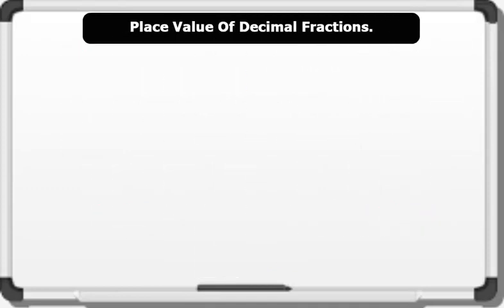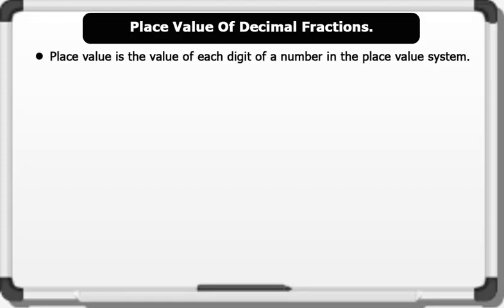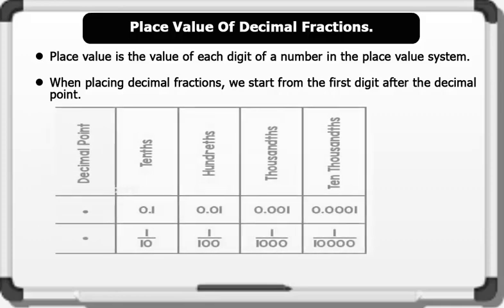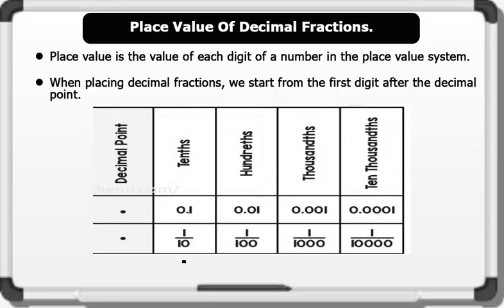Place value of decimal fractions. Remember that place value is the value of each digit of a number in the place value system. When placing decimal fractions, we start from the first digit after the decimal point. The first place after the decimal is gotten by dividing the number by 10 — it is called the tenths place. The second place after the decimal is gotten by dividing by 100 — it is called the hundredths place.